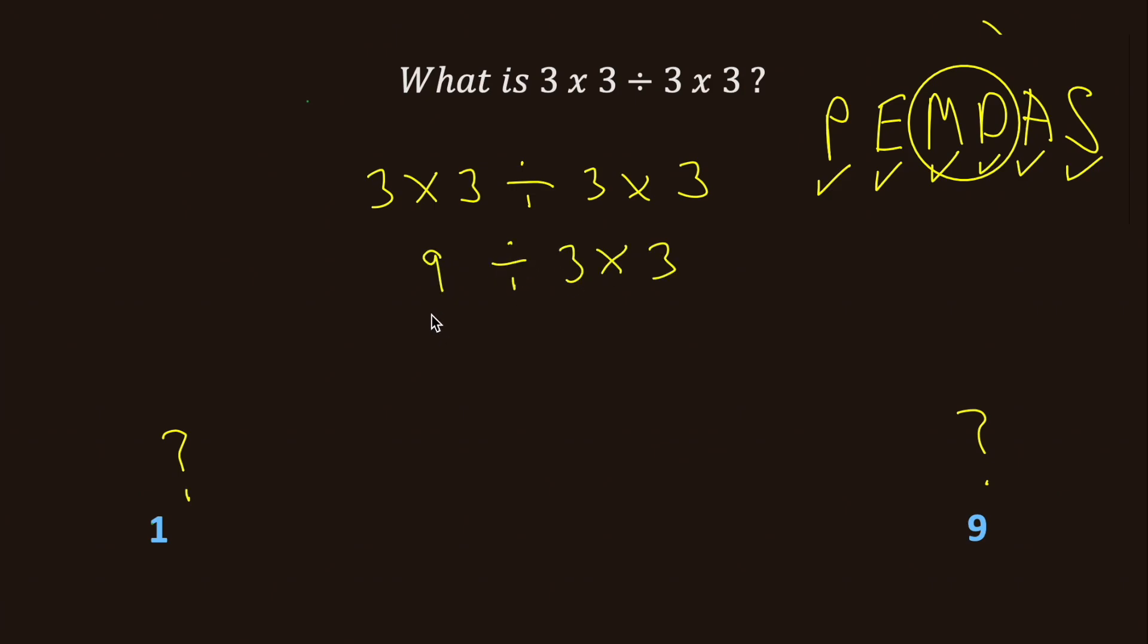Next, we evaluate 9 divided by 3. We get 3. Finally, we evaluate 3 times 3 and we get 9.